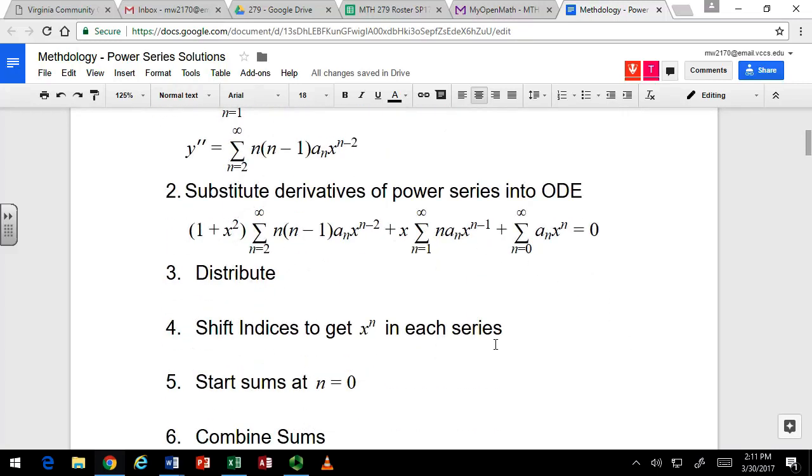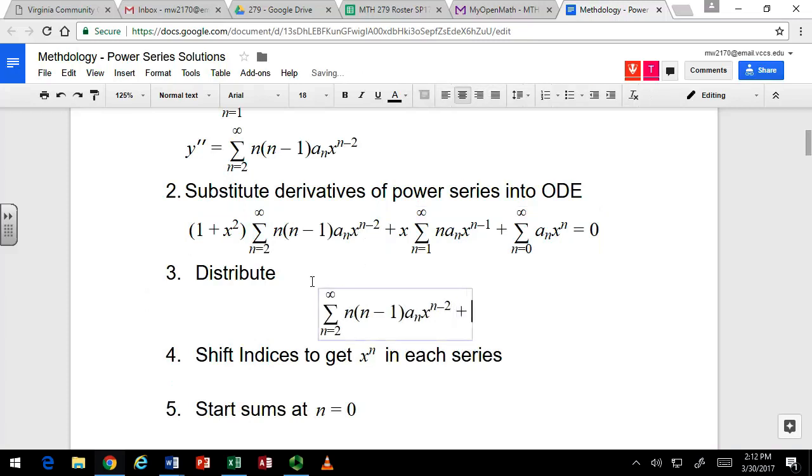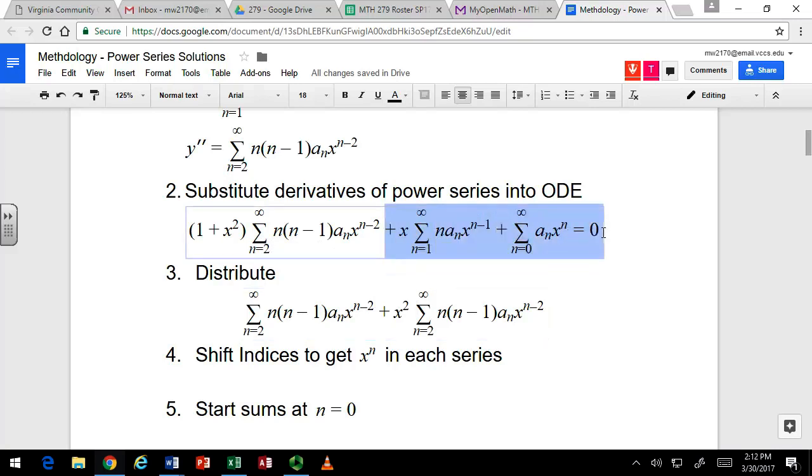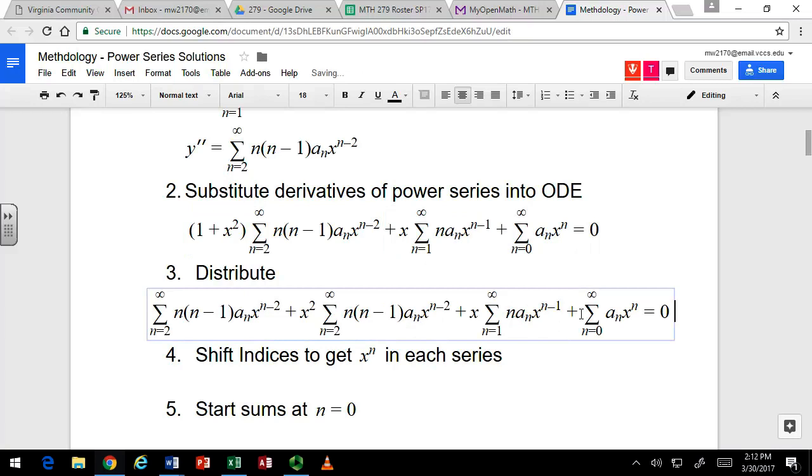But before we do that, we want to distribute, specifically distributing here. The first summation we'll distribute to the one and to the x squared. So this sum times one is just the sum itself. And this sum times x squared will give us an x squared in front. So we get two sums from that first one when we distribute. The rest of the equation is the same. No distributing there.